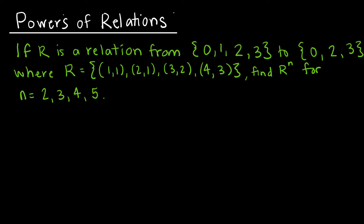Being able to compose a relation with itself essentially tells us that we can find powers of a relation. For R to the N, R² is really just R composed with R. R³ is R² composed with R. R⁴ is R³ composed with R, and R⁵ is R⁴ composed with R.